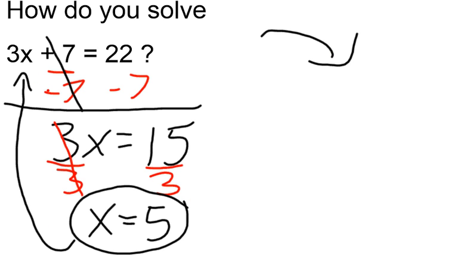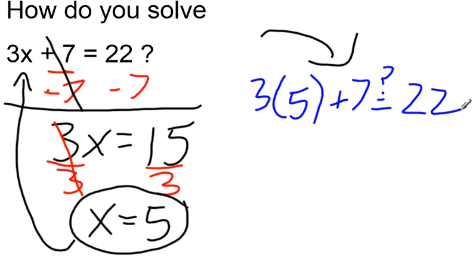So I'm going to take 3 times 5 and add 7, and I want to see, is that equal to 22? Well, 3 times 5 is 15, and yes, 15 plus 7 is equal to 22.